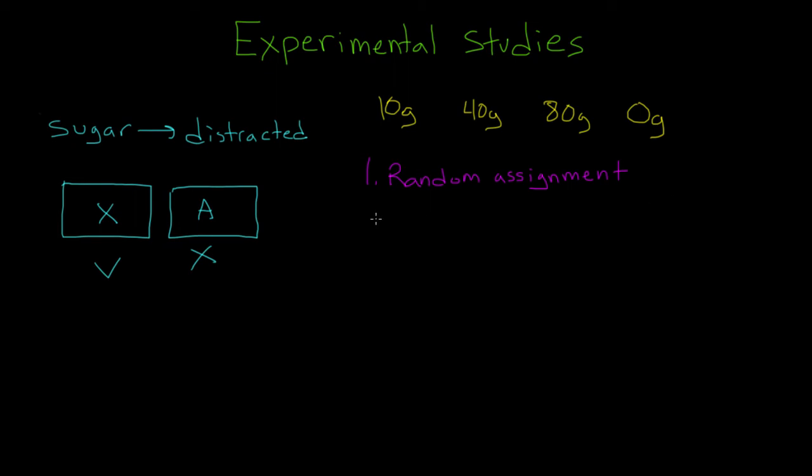And after they've been assigned to these groups, and their parents have signed consent forms, and they've signed assent forms, then we'll have them consume a pill with one of these different levels of sugar. So consume sugar. And yes, everyone will take a pill, even the people who are sorted into the zero gram condition. And this is to help minimize the placebo effect, which is the tendency for expectations to influence the outcomes of studies.